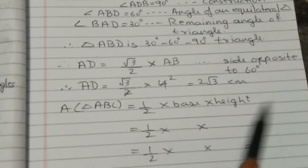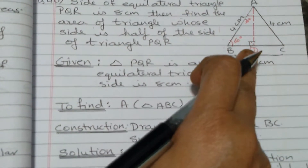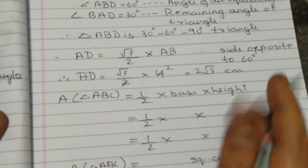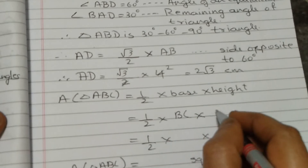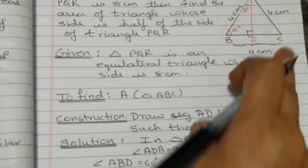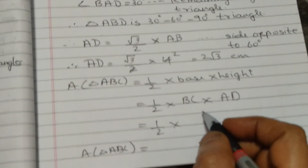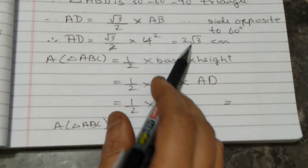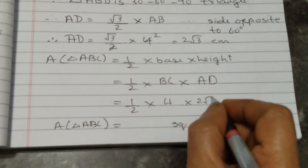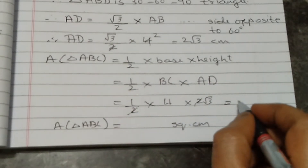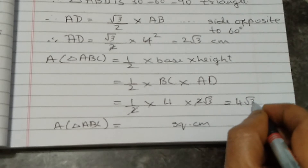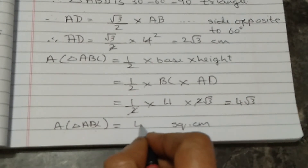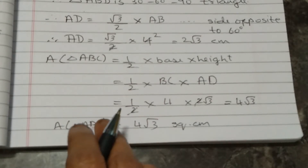Now area of triangle ABC = half into base into height. Base is BC = 4 cm, height is AD = 2 root 3. So area = half into 4 into 2 root 3. The two 2s cancel, giving 4 root 3. Therefore area of triangle ABC = 4 root 3 square centimetre.